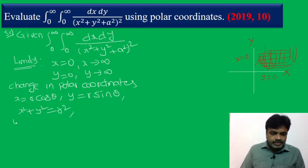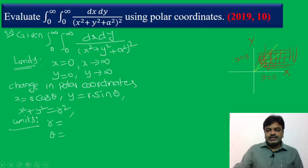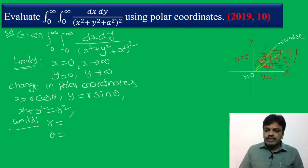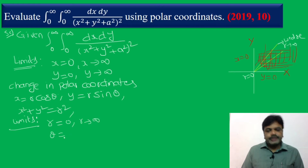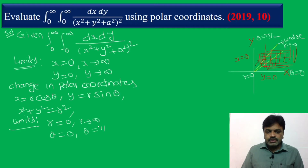Now I want to find the limits for r and θ. Our bounded region is only the first quadrant. When we change into polar coordinates, draw a wedge. r goes from 0 to infinity. Turn this wedge from the x-axis, where θ = 0, up to the y-axis, where θ = π/2. So θ limits are 0 to π/2.